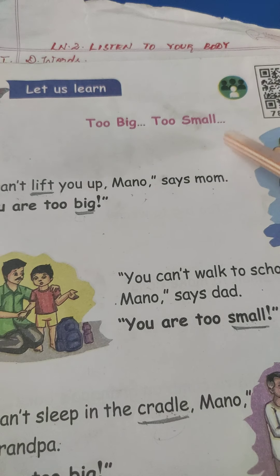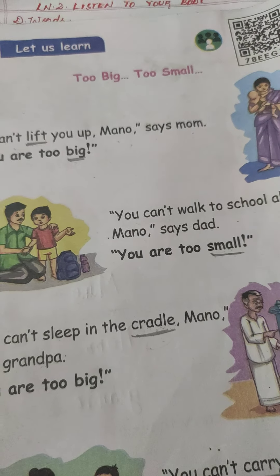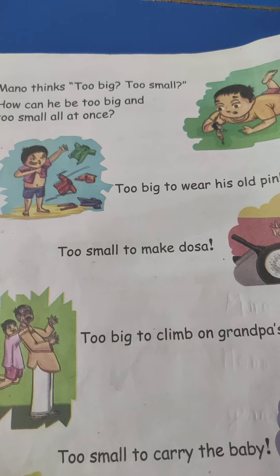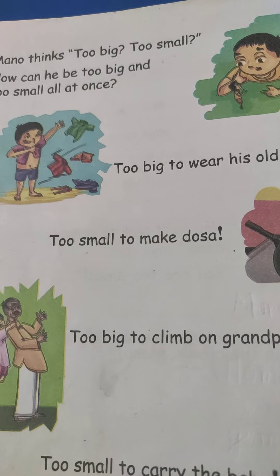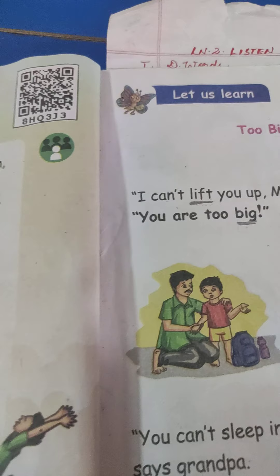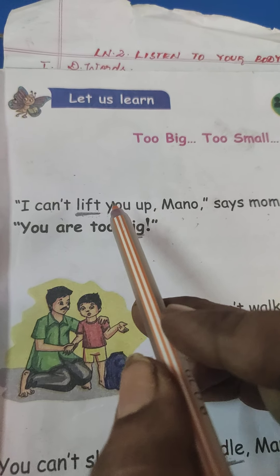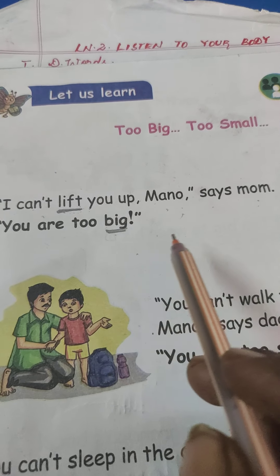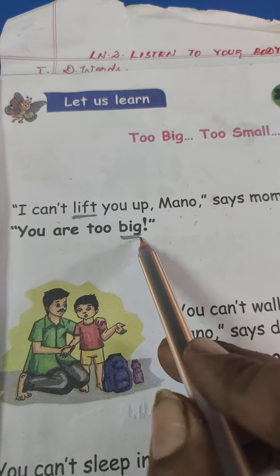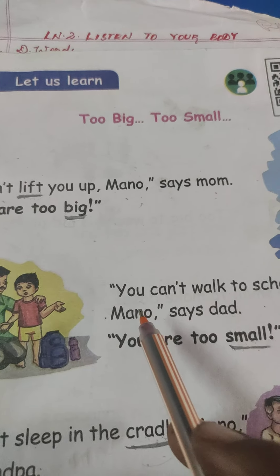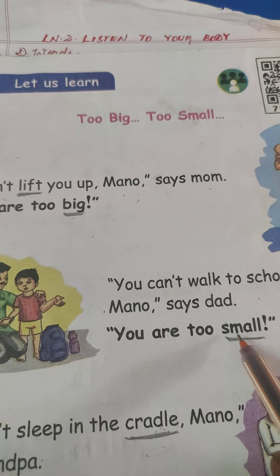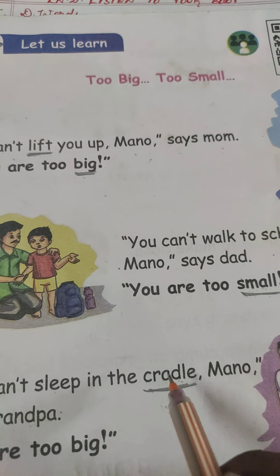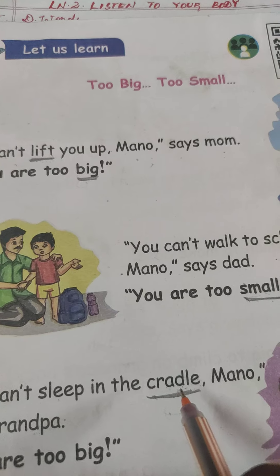See here: too big, too small. You can underline here. First, underline the word lift — L-I-F-T, lift. Underline the word big — B-I-G, big. Next, underline the word small — S-M-A-L-L, small. Next, underline the word cradle — C-R-A-D-L-E, cradle.